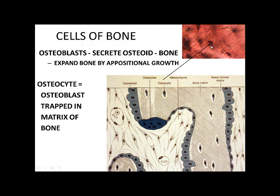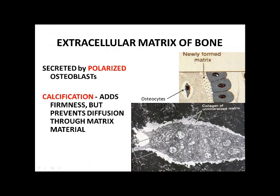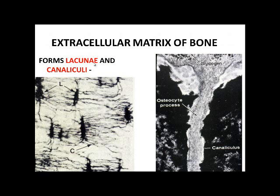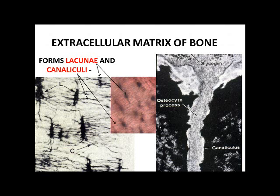Whenever osteoblasts lay down a new matrix of bone, they do so in a polarized fashion — next to the old bone — and finally surround themselves and become trapped, becoming osteocytes. A lacuna is a space or opening — it's the part you're standing in where you did not yet paint in our model. Canaliculi are channels where cells were touching one another before the bone was laid down, leaving little channels behind.